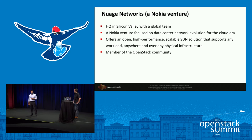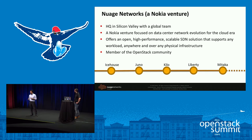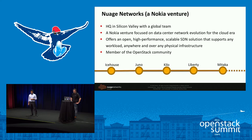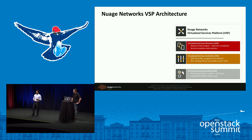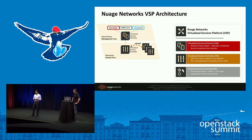For people that don't know Nuage Networks: we are based in Silicon Valley, a little over three years old, a Nokia venture focused on leveraging our expertise in networking and bringing that to cloud environments. To sum it up, we basically connect any workload anywhere over any infrastructure — a completely software-based virtual solution that spans multiple data centers. Architecturally the product is three tiers: at the management layer we have the Virtualized Service Directory, which is basically our policy manager with a northbound API interface that manages the entire overlay network.